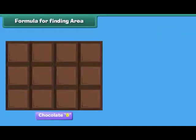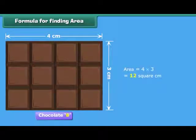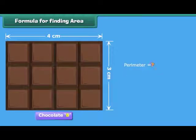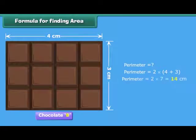We found the area of chocolate B by counting the total number of squares on it. Alternatively, we can calculate the area by multiplying the number of squares along the length with the number of squares along its width. Thus, area is equal to length multiplied by width. The perimeter of chocolate B is equal to twice the sum of squares along its length and width, which gives fourteen centimeters.